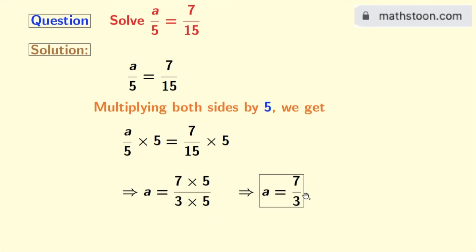As 7 by 3 cannot be simplified further, we get a is equal to 7 by 3 as our final answer.